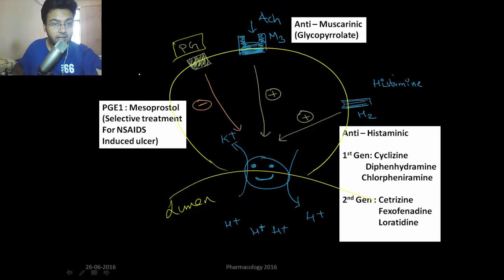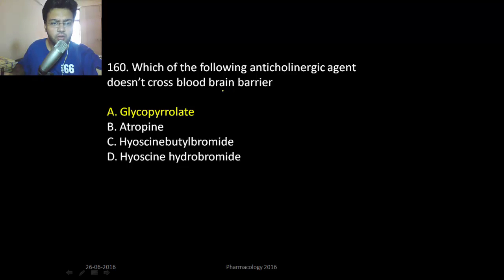But remember, this is selective treatment, not treatment of choice. The treatment of choice for NSAID-induced ulcer is proton pump inhibitor like omeprazole, because it inhibits every pathway. The following doesn't cross the blood-brain barrier: remember glycopyrrolate.